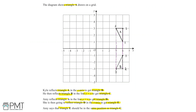Now we need to reflect triangle B in the line y equals x. So let's start by drawing the line y equals x on our diagram. Now looking at triangle B, we can apply the same principle of how we reflected triangle A. We'll look at the diagonal distance to get from each point to the line y equals x.